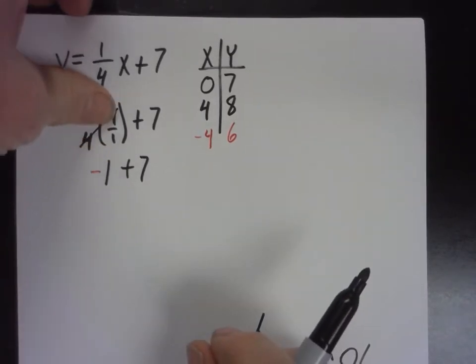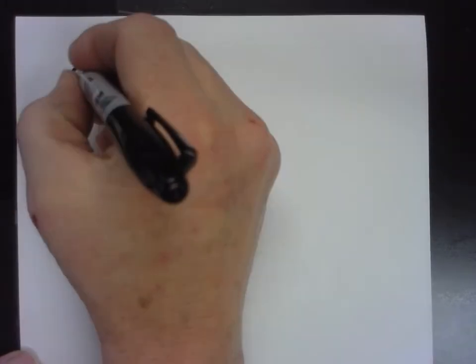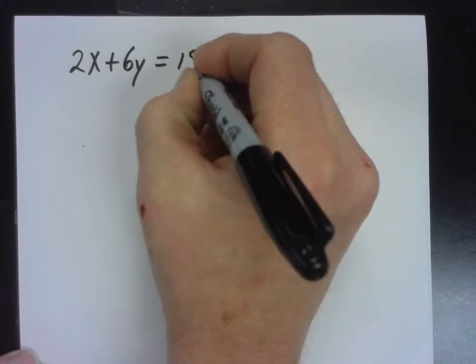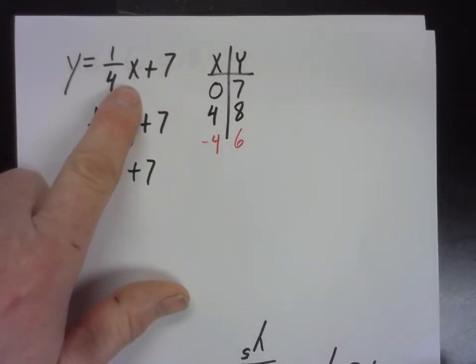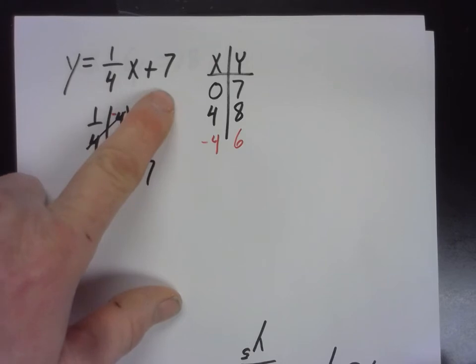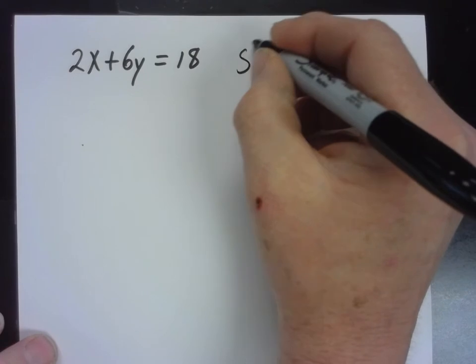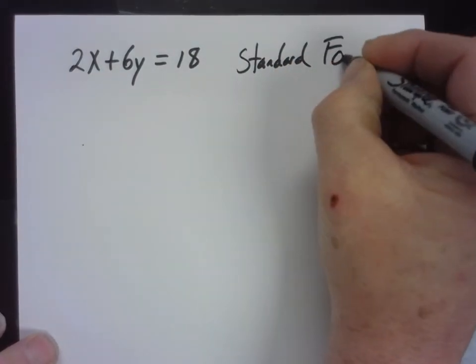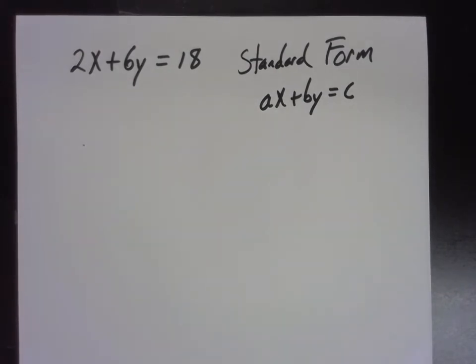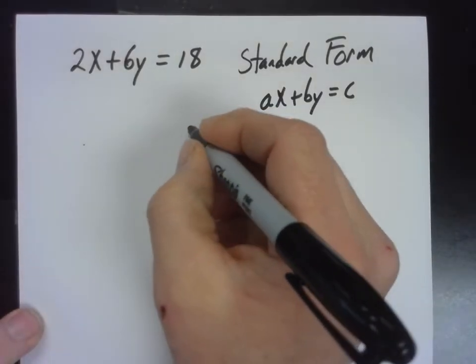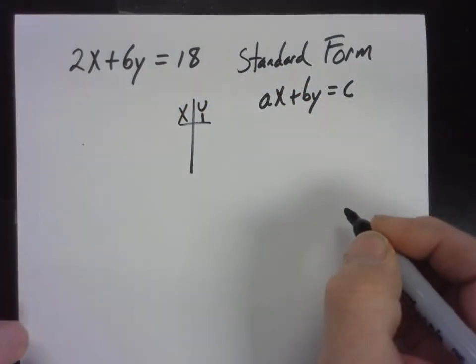What if the equation is not in that form? What if it looks like this? Can we still find two points on this line? This one is in what we call slope-intercept form. Do you remember that from last year? Slope-intercept form, Y-intercept form. This one is in what we call standard form. So it looks like AX plus BY equals C. It's in this form. We still want to be able to graph it. Now, there's a couple ways we can graph it. I won't tell you both of them, but I'm just going to show you one way. And it looks really similar to what we've been doing.